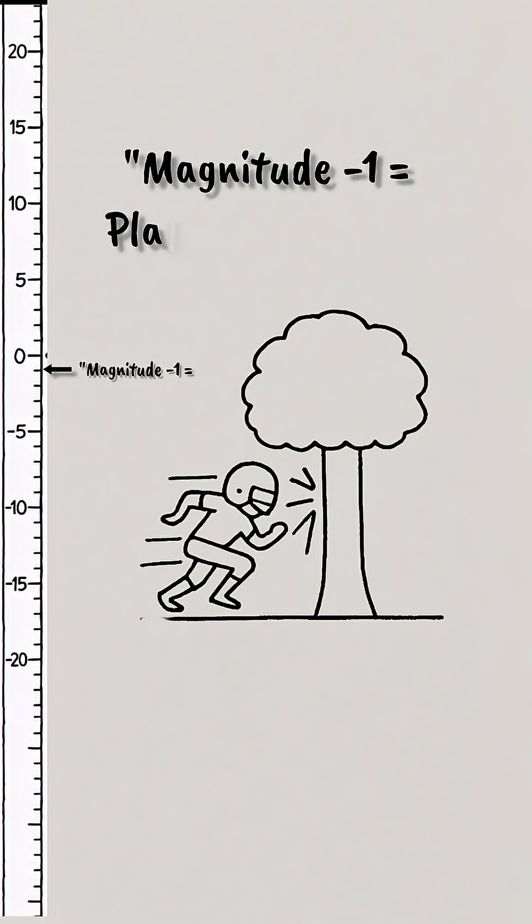A magnitude negative one quake is like a single American football player running into a tree in your yard.